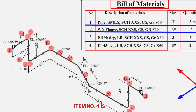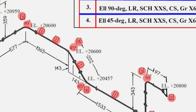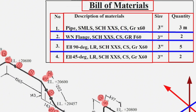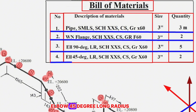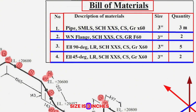Item number 4 is shown in two places on this piping isometric drawing. Item number 4 is an elbow, 45 degree, long radius, schedule XXS, carbon steel, grade 1060, size 3 inches, quantity 2 pieces.